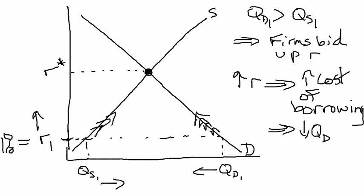So think about what's going on here. You've got a shortage — firms with wonderful investment projects can't get financing. Those firms have an incentive to bid up the real interest rate, not because they're nice, but because the only way they can get financing is by being willing to pay more than 1% interest. As the real interest rate increases, some firms decide they don't want to borrow at 1.5% or 2%, so the quantity demanded of loanable funds falls.